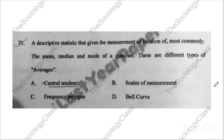Question number seventy-one: 'A descriptive statistic that gives the measurement of location — most commonly the mean, median, and mode.' Since all three — mean, median, and mode — appear together, the correct answer is A — central tendency. These three are all components of central tendency.